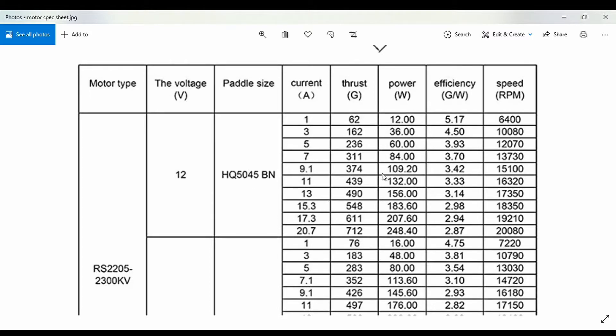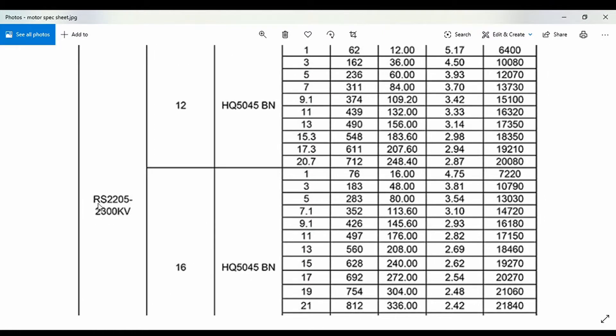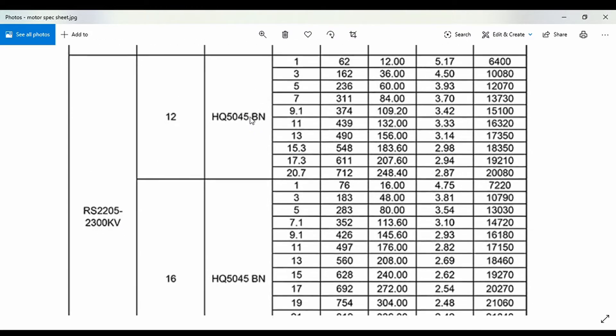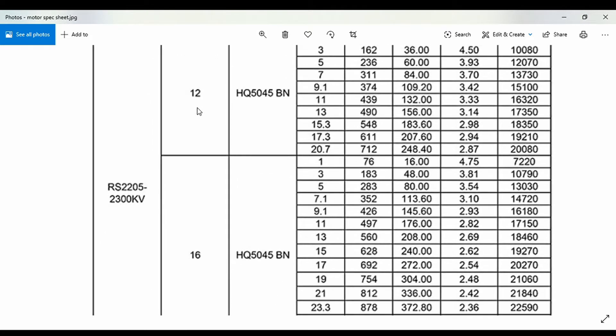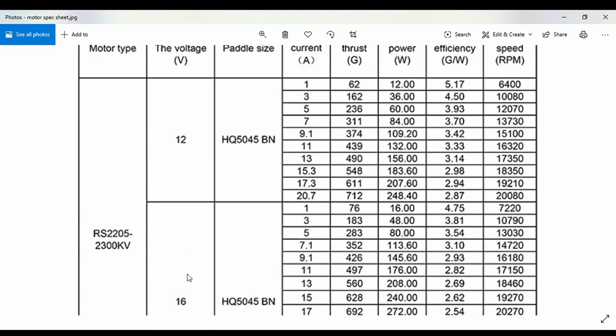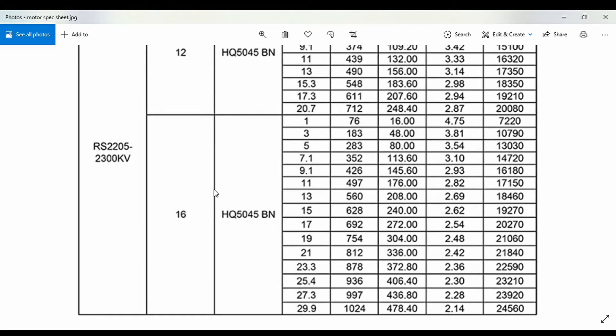Under the diagram, we'll find this table, the thrust sheet or thrust table. In the first column, you'll see motor type: this particular motor is 2205 size having 2300 KV. There are two sections: voltage at 12 and 16. These values are what you get when you apply 12 volts to the motor, meaning a 3S battery. These values are what you get with 16 volts, a 4S battery.